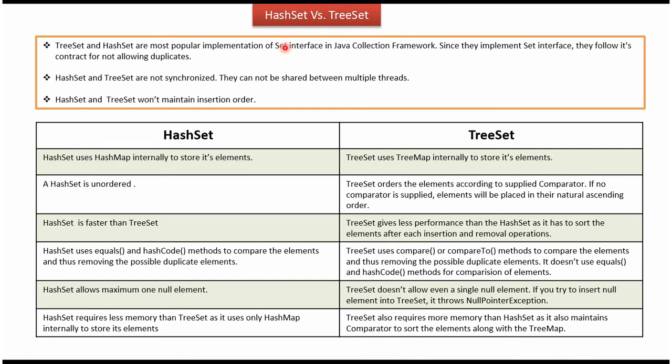In this video tutorial, I will cover the difference between the HashSet and TreeSet. Both TreeSet and HashSet implement the Set interface, and both won't allow duplicates. Both TreeSet and HashSet are not synchronized, so they cannot be shared between multiple threads. Both TreeSet and HashSet won't maintain any insertion order. These are the common things between HashSet and TreeSet.